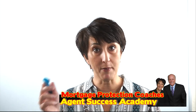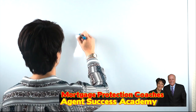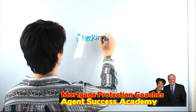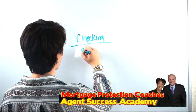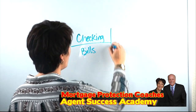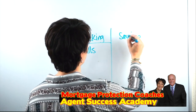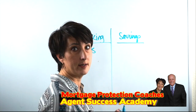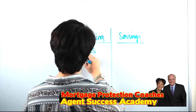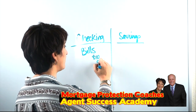So every month — I'm going to draw this out a little bit here for you — so your checking account is where we pay our bills from. Over here we have our savings account; our savings account is where we save. So every month we pay our bills and every month, let's just say we're $10 short.